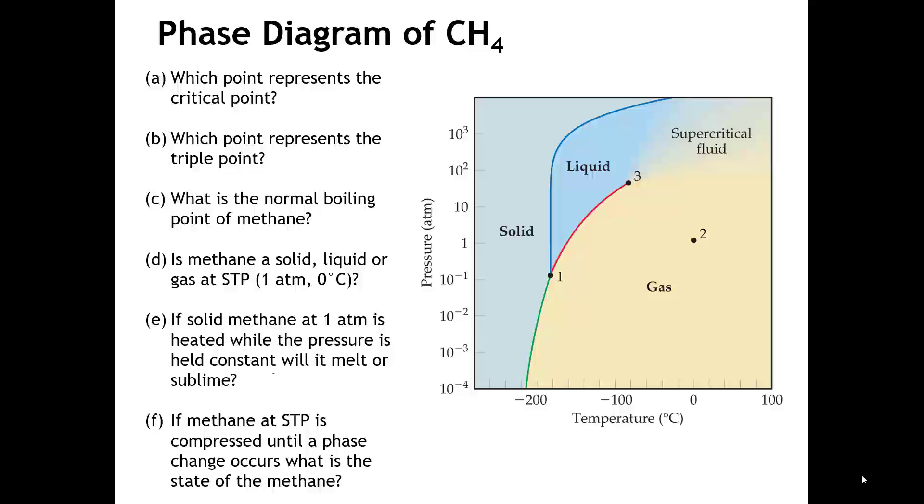Let's go over the answers now. First question asks us to identify the critical point. So the critical point is where the vapor pressure curve ends. So the critical point here is going to be 0.3. The next question asks us to identify the triple point. The triple point is the conditions where the gas, liquid, and solid are all in equilibrium with one another. And, of course, that is the starting point of the vapor pressure curve. And so that's going to be 0.1.